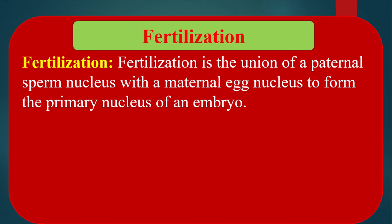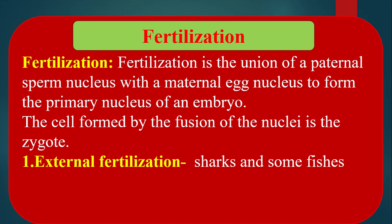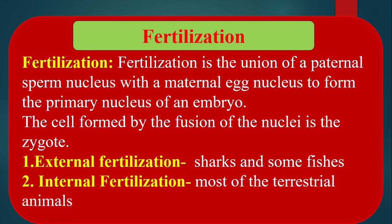On the basis of the place of occurrence, fertilization is divided into two types. Number one, external fertilization — when fertilization takes place outside the body of an animal, it is called external fertilization. This type occurs in sharks and some fishes. Number two, internal fertilization — when fertilization occurs inside the body of an animal, it is called internal fertilization. Example: most terrestrial animals.